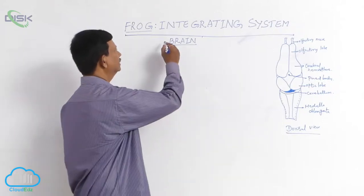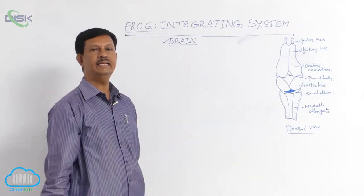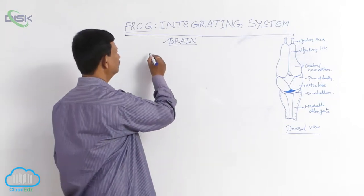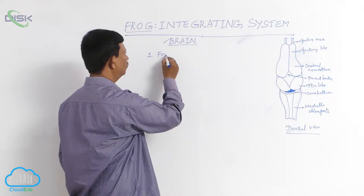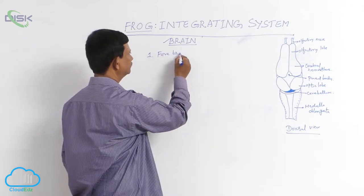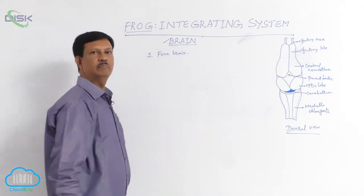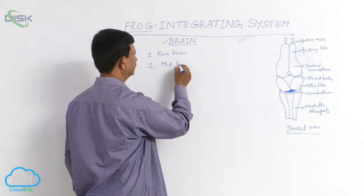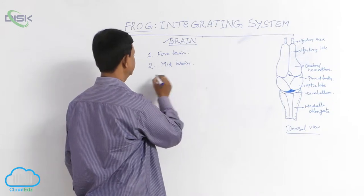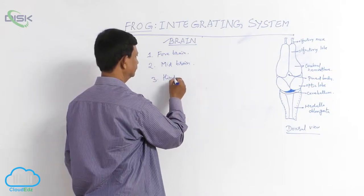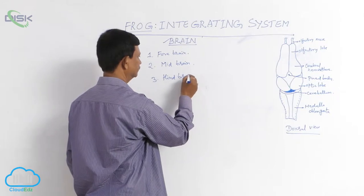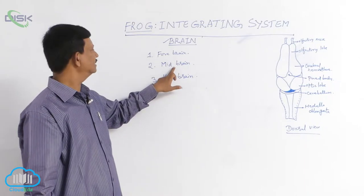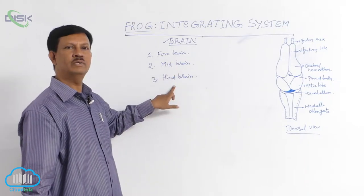Frog brain. It is found in the cranium or brain box. It is divided into three parts: forebrain, midbrain, and hindbrain. These are also known as prosencephalon, mesencephalon, and rhombencephalon.